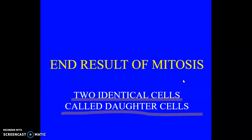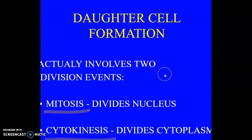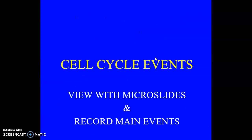The end result of mitosis is two identical daughter cells — that's just what they're called. There's a mother cell that divides into two identical daughter cells. There are two actual division events that take place. Here we have some daughter cells in this picture. The two events are: mitosis, which actually divides the nucleus and the nuclear material, and cytokinesis, which divides the cytoplasm.